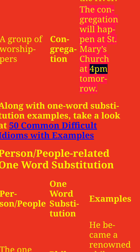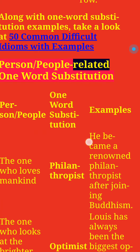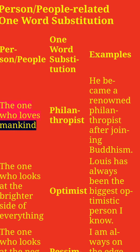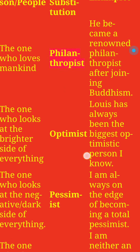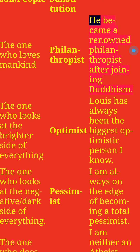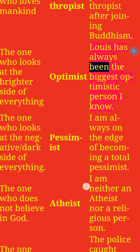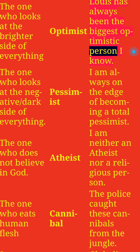Person People Related One Word Substitution with Examples. The one who loves mankind: Philanthropist. He became a renowned philanthropist after joining Buddhism. The one who looks at the brighter side of everything: Optimist. Lewis has always been the biggest optimistic person I know.